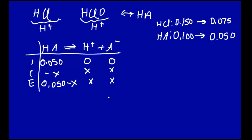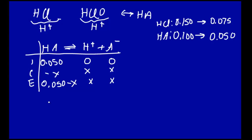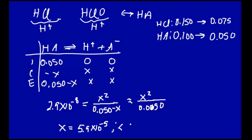The acid dissociation constant for HClO is 2.9 times 10 to the minus 8. That's equal to the equilibrium concentration of H⁺ and A⁻, which is X squared, over the equilibrium concentration of HA, 0.050 minus X. We'll ignore X, so that's approximately X squared over 0.050. We solve this for X and get X equal to 5.9 times 10 to the minus 5. That is small — less than 5% of the 0.05 we're subtracting it from — so the approximation is valid.